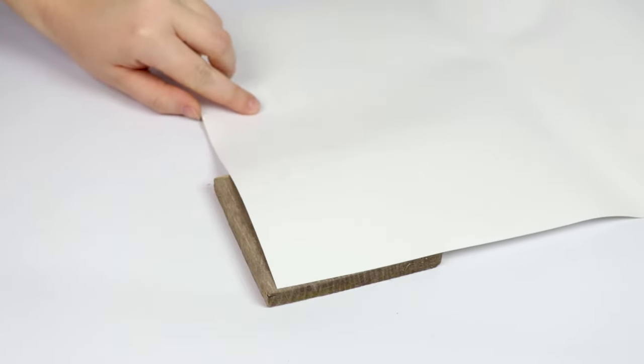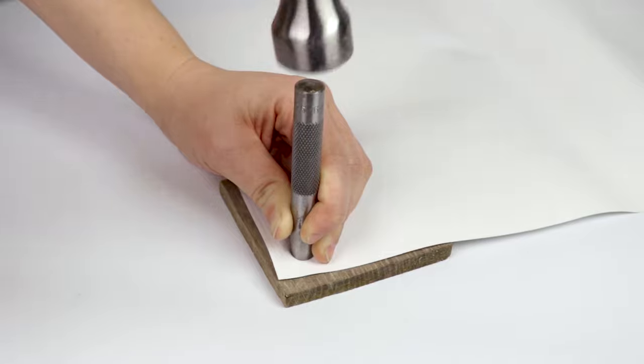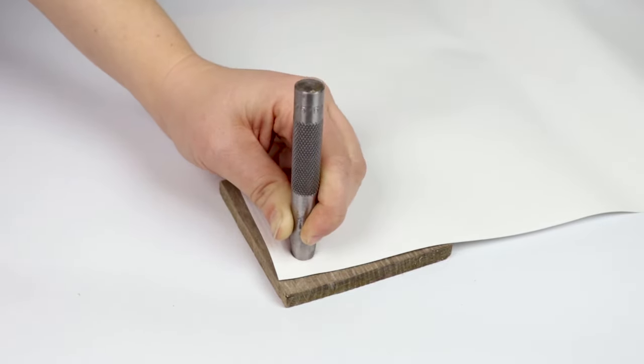Place the corner of your vinyl banner on top of the wooden block. Take the die punch and align it with the banner corner. Give it a few good hits with the hammer as you create a hole.